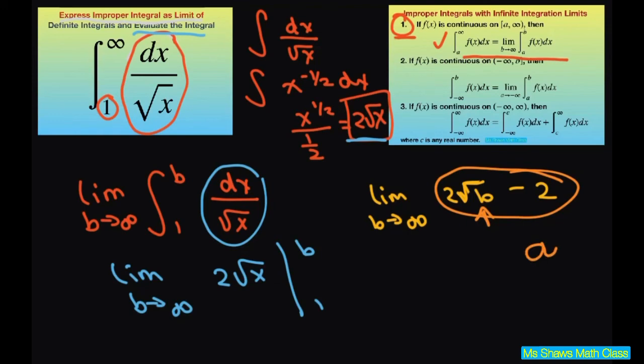So it's going to go off to infinity. And there's no numerical value, so it diverges. It doesn't go to a certain value.